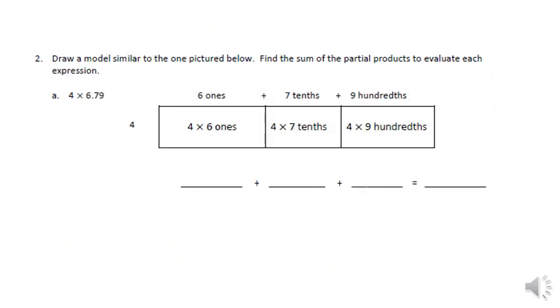Number two says draw a model similar to the one pictured below to find the sum of the partial products to evaluate each expression. Okay. So if we're talking, let's see what they've done here. They've done an area model, and they're saying four here, which is four times six ones, seven tenths, and nine hundredths. So I got 24 ones.